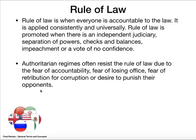Rule of law is when everybody is accountable to the law — it is applied consistently and universally. Rule of law is promoted when there's an independent judiciary, separation of powers, checks and balances, and officials can be removed either by impeachment or a vote of no confidence. Authoritarian regimes try to resist the rule of law because they're worried about losing power, so those regimes are often corrupt and even punish their opponents.